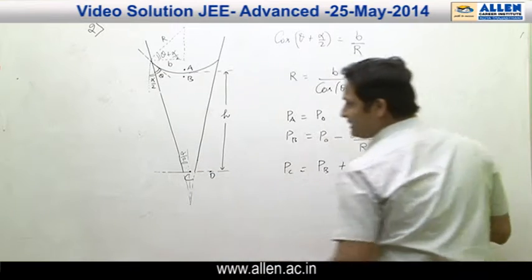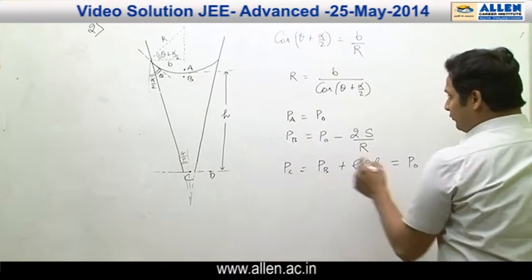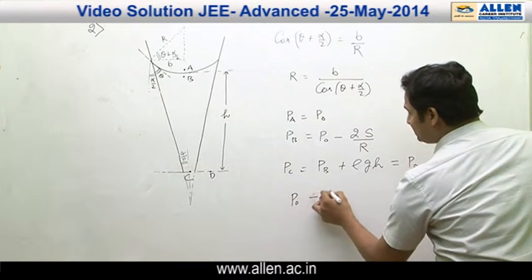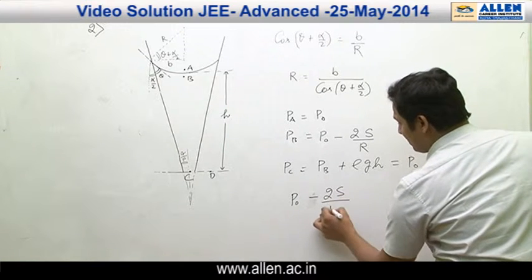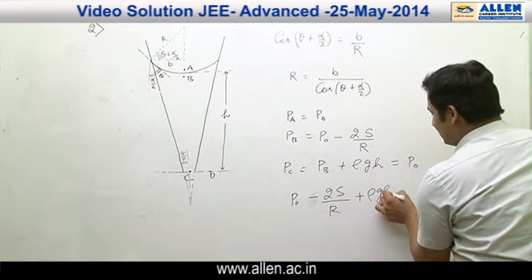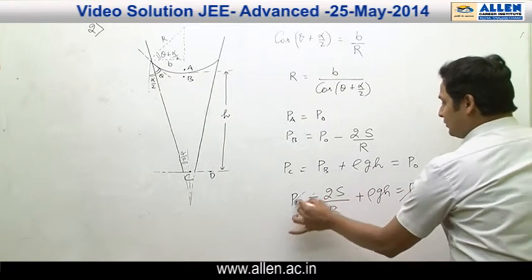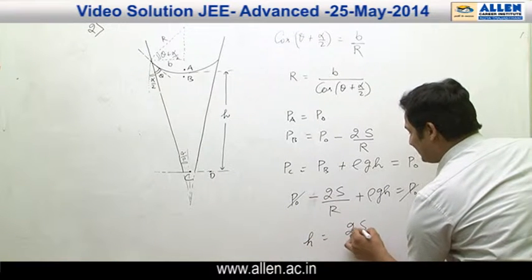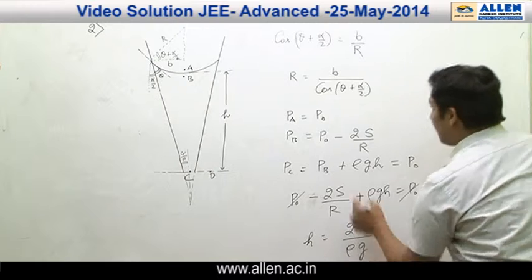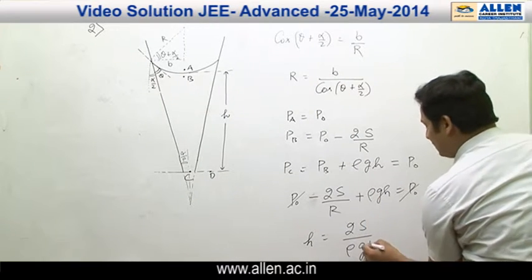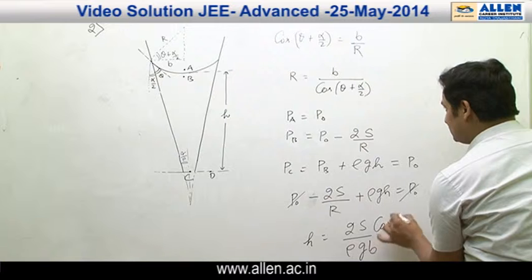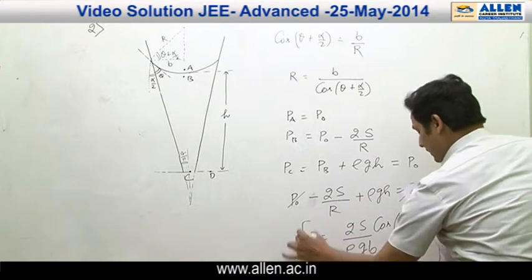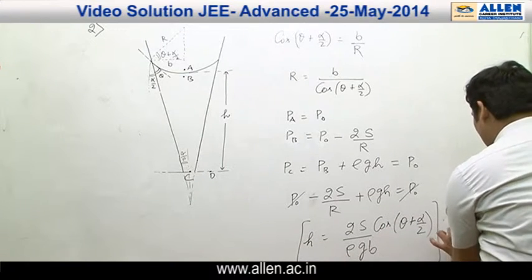The pressure at point D equals pressure at point C. Substituting PB as P₀ minus 2S/R, we get P₀ minus 2S/R plus ρgh equals P₀. The P₀ terms cancel, so height h equals 2S divided by ρg, and substituting R equals B divided by cos(theta + alpha/2), we get the final expression. Hence the answer is option number D.